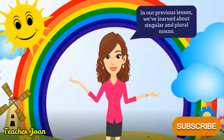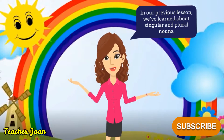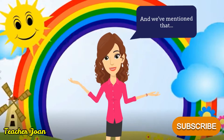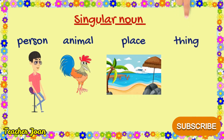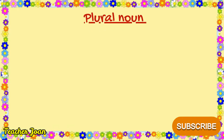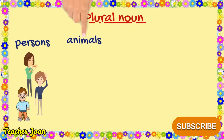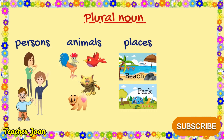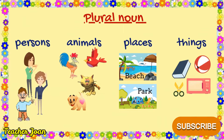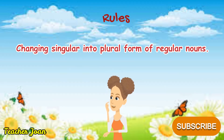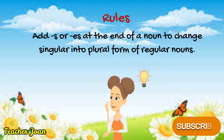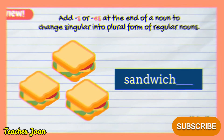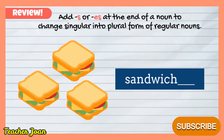In our previous lesson, we learned about singular and plural nouns. A singular noun names one person, one animal, one place, or one thing, while a plural noun names more than one. We also learned the rules for changing singular into plural form of regular nouns — that is by adding S or ES at the end of a noun. Let's have a quick review.